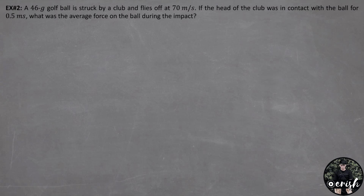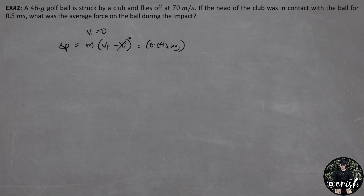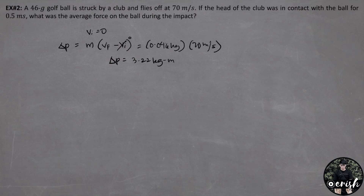From the problem, the ball started from rest, so the initial velocity is 0. The change in momentum is equal to mass times the final velocity minus the initial velocity. Since the initial velocity is 0, the change in momentum is simply mass times the final velocity. The mass is 0.046 kg times the final velocity of 70 meters per second. By calculating, the change in momentum is equal to 3.22 kg·meters per second.